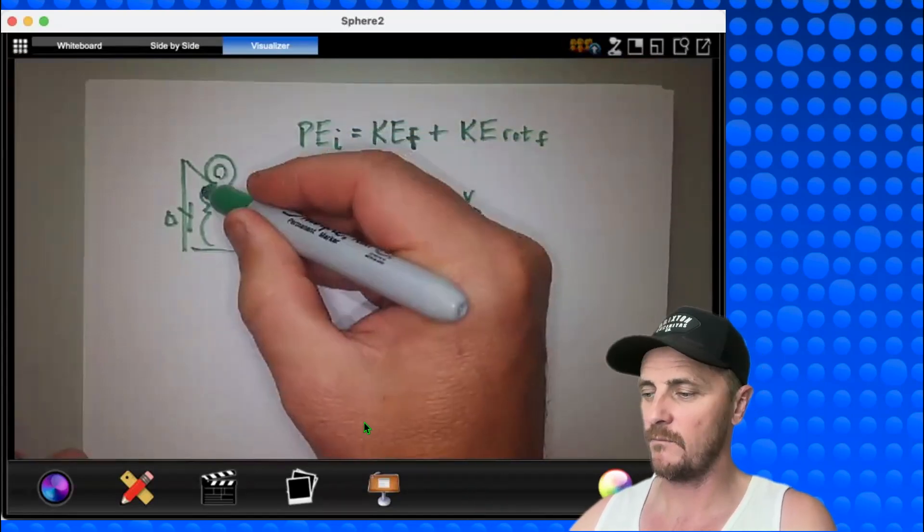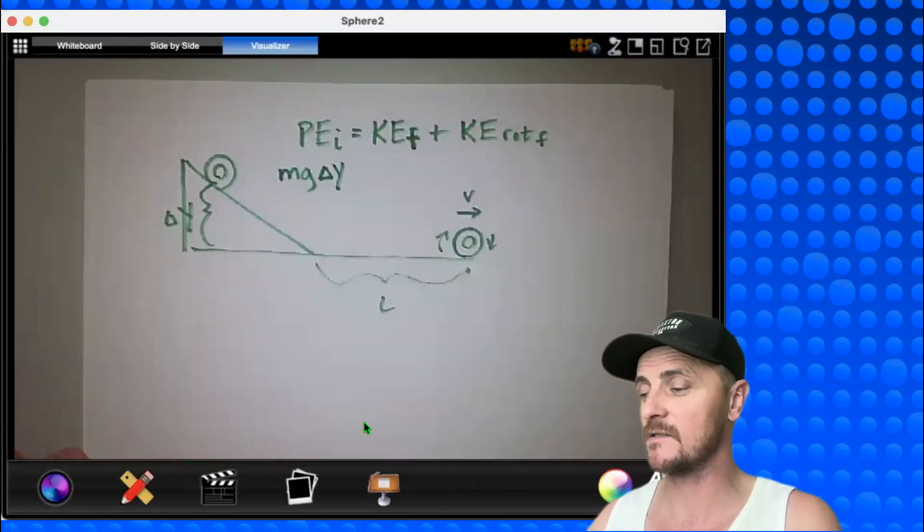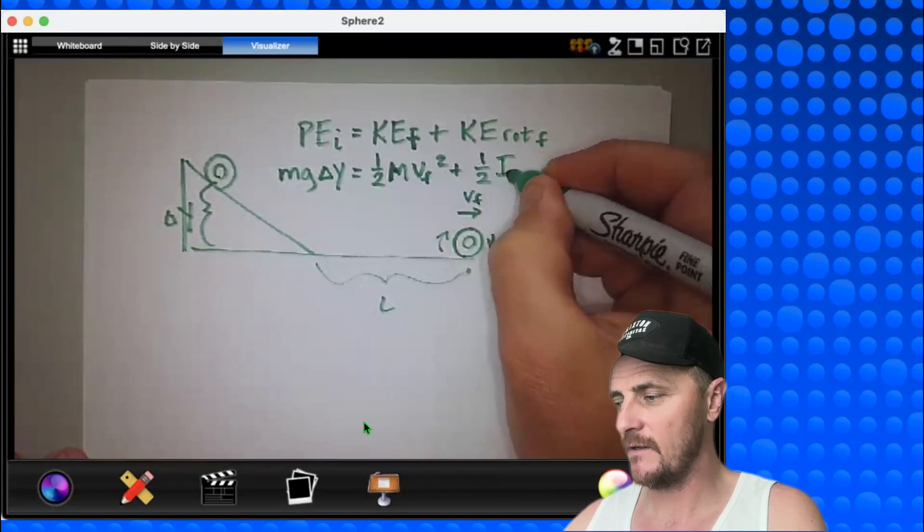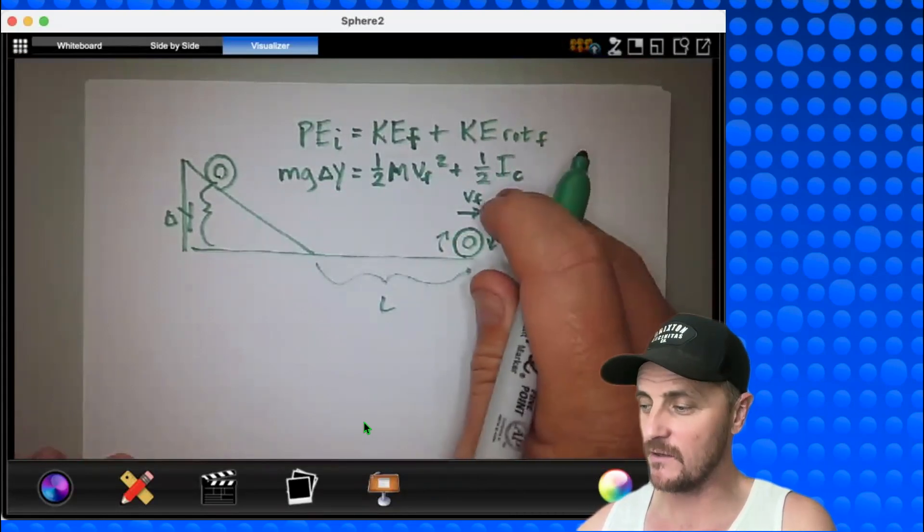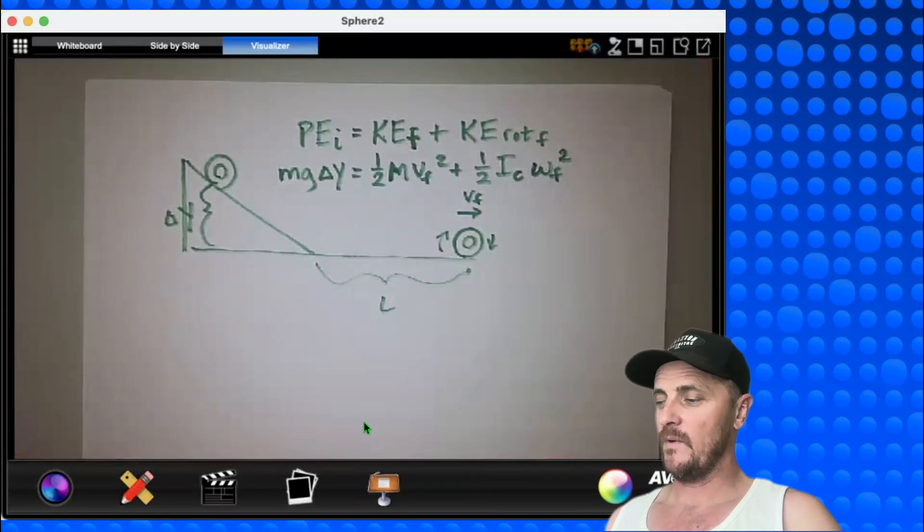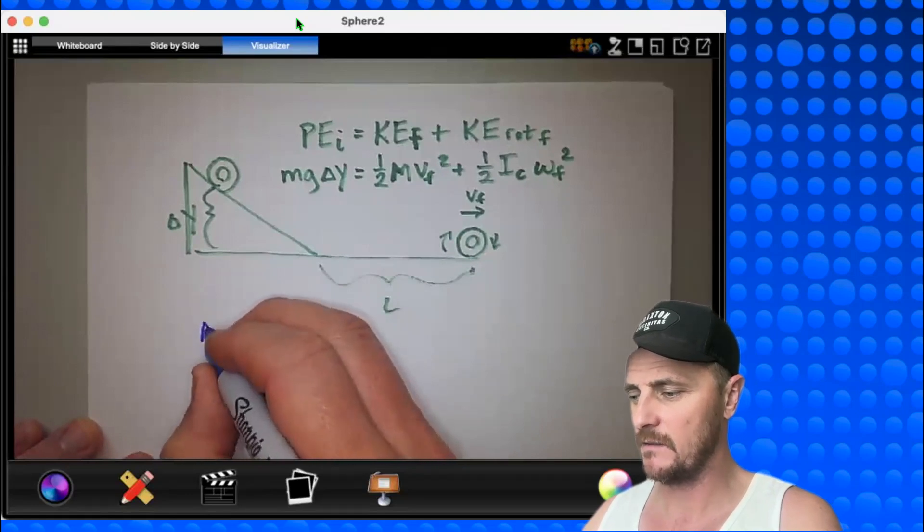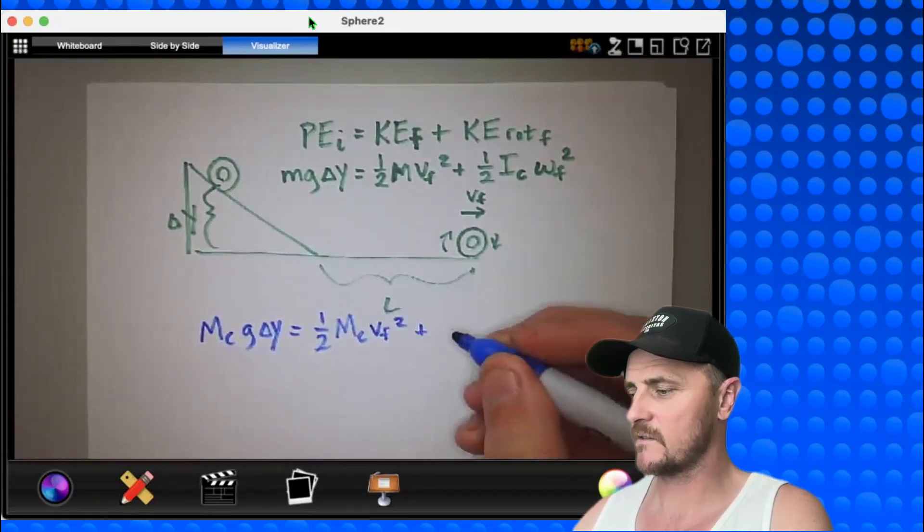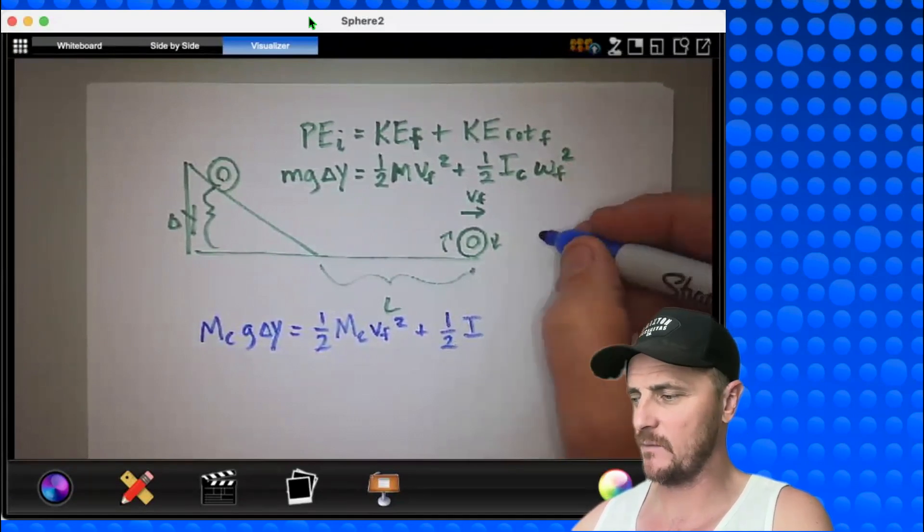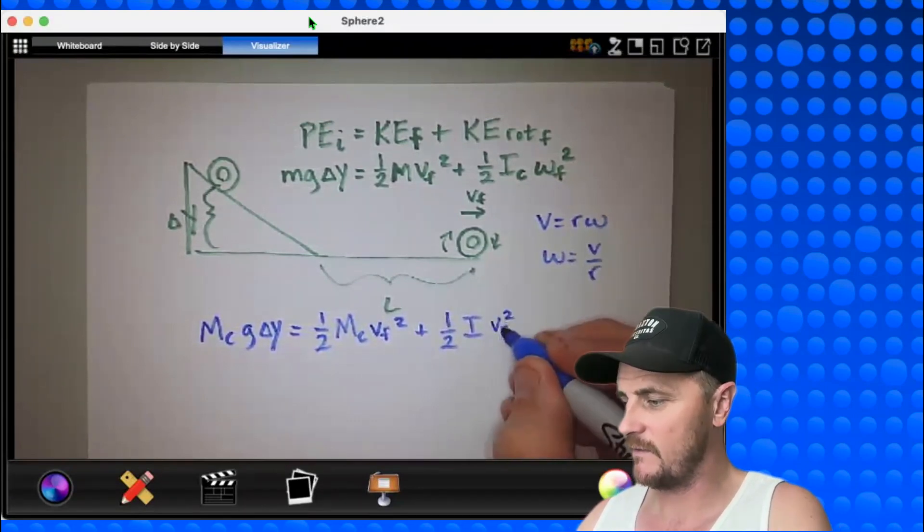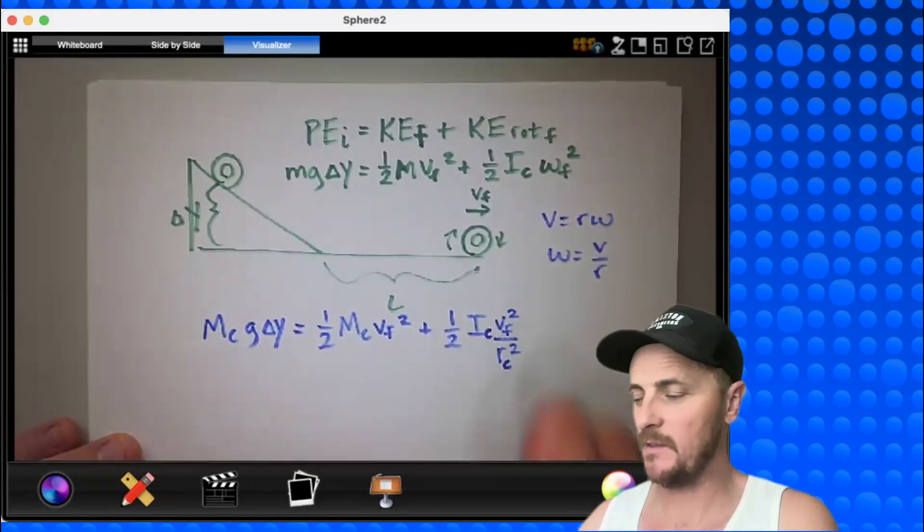This would be mgh, but our h is being called delta y. Remember delta y is going on the horizontal axis equals 1 half mass times velocity final squared plus 1 half i. This quantity, the rotational inertia of the cylinder, is what I'm looking for from the slope of my graph in this part times omega squared. And I'll call it omega final just to be consistent. Okay, we definitely need to plug in specific information at this point. So what I'm going to do next is call my masses mc. So mcg delta y equals 1 half mc times vf squared plus 1 half ic, and remember what omega is equal to. If v is equal to r omega, then omega is equal to v over r. So I'll go ahead and put in v final squared over r squared. And I added some c's here to be a little more specific.